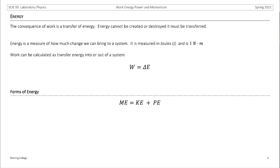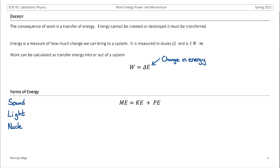We should consider work as a transfer of energy. Energy is described in your textbook as a form of currency — more specifically, energy is a way that accounts for how much motion we can have. It's important to understand that energy cannot be created or destroyed; it must be transferred. Energy is measured in a unit called the joule, which is defined as a newton multiplied by a meter. Work is also measured in joules. Work can be calculated as the change in energy of a system, where delta E represents change in energy. There are multiple forms of energy — sound, light, nuclear energy, thermal energy, even electromagnetic — but for our unit, we're going to focus on mechanical energy.